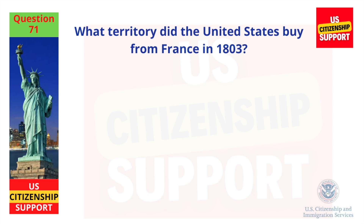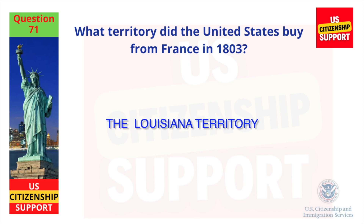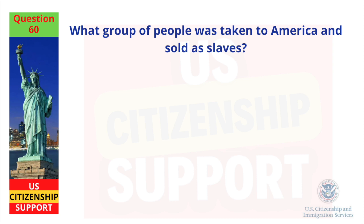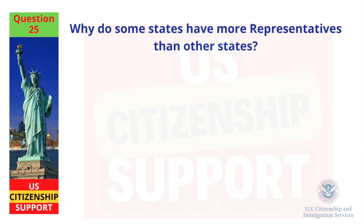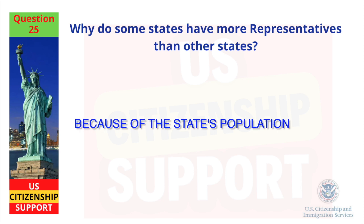What territory did the United States buy from France in 1803? The Louisiana Territory. What group of people was taken to America and sold as slaves? Africans. Why do some states have more representatives than other states? Because of the state's population.